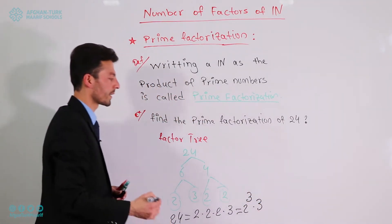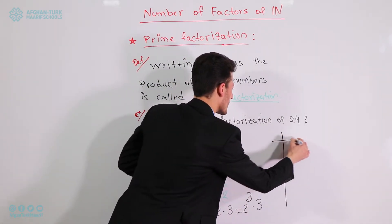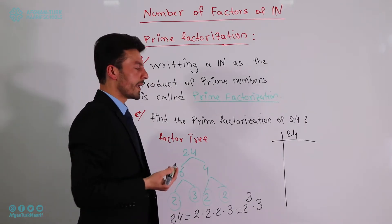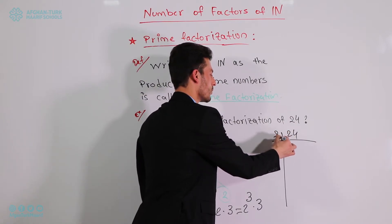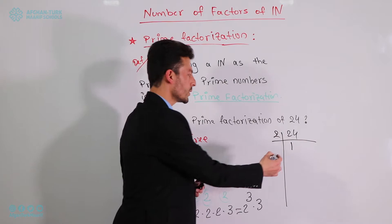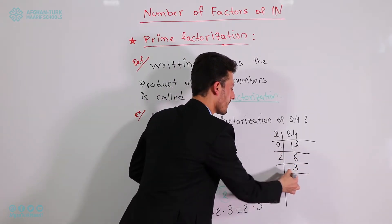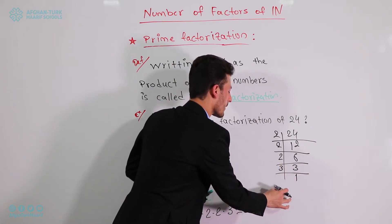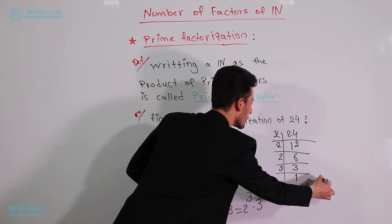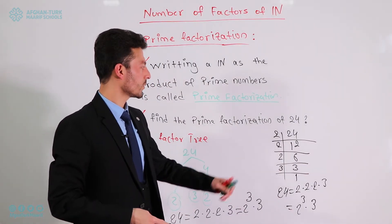The second method for finding prime factors uses a vertical and horizontal line — a division table. We draw the lines, then divide by the smallest prime number, which is 2. So 24 divided by 2 is 12, divided by 2 is 6, divided by 2 is 3, divided by 3 is 1. So again, 24 equals 2 times 2 times 2 times 3, which equals 2 to the power of 3 times 3. You can apply this same method to any number.